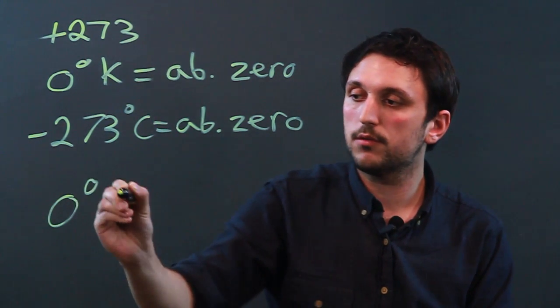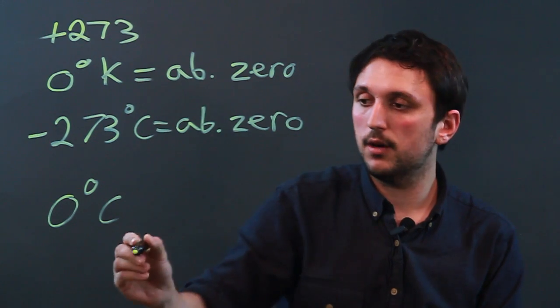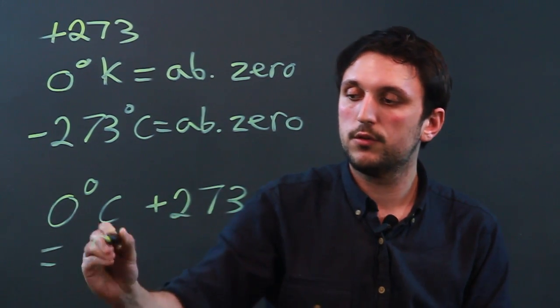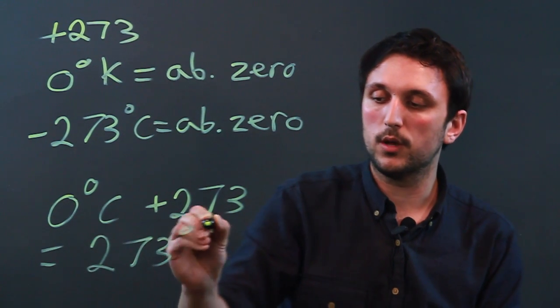If we have zero degrees Celsius and we want to convert to Kelvin, we say plus 273 equals 273 degrees Kelvin.